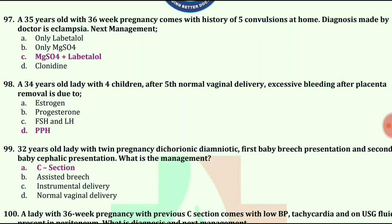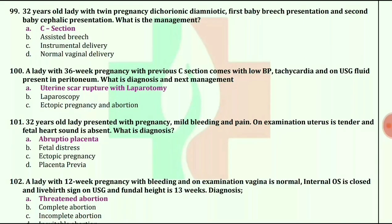A 32-year-old lady with twin pregnancy, dichorionic diamniotic, first baby breech presentation and second baby cephalic presentation. What is the management? The answer is C-section.